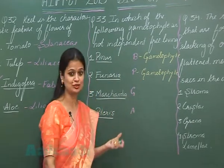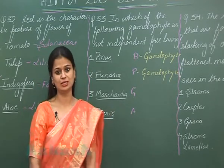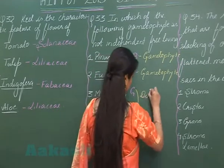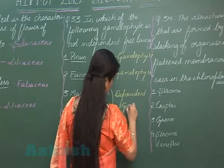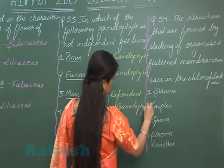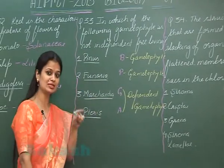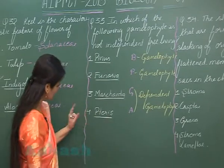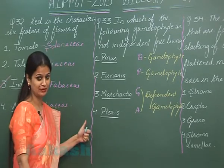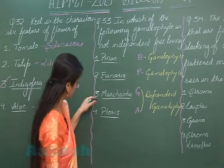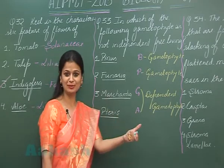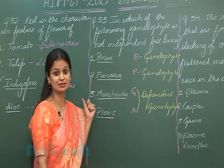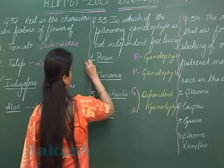In gymnosperms and angiosperms, the main body is the sporophyte and the gametophyte is dependent on the sporophyte — so free-living existence is absent. We need to find the member belonging to gymnosperms or angiosperms. Pteris is a pteridophyte with a free-living gametophyte. Marchantia and Funaria are bryophytes. Pinus is a gymnosperm with a dependent gametophyte, so the right option is option number 1.